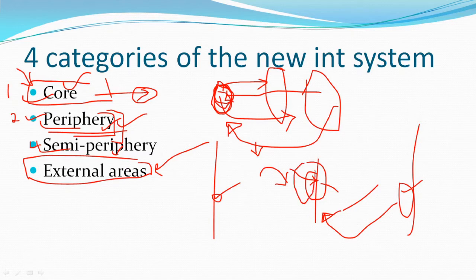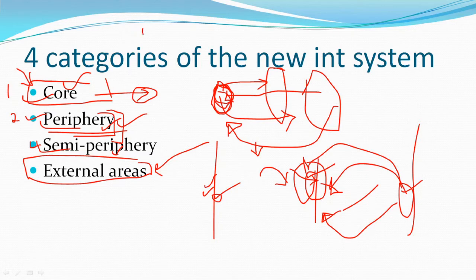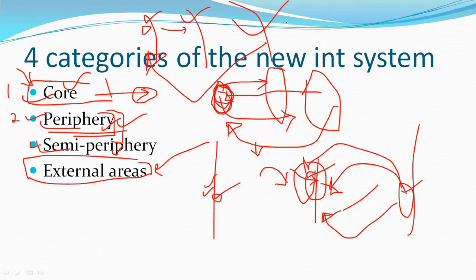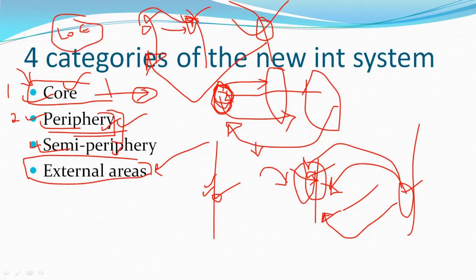The semi-peripheral countries also exploited the peripheral countries — everyone exploited the periphery, with the core doing it in a much more systematic manner. Again, using the Hunger Games example: the further you move from the core — the Capital, the center — the poorer you get, because all raw materials are exported cheaply from the poorest countries. That manufactured raw material is then sold back at higher prices to those same poorer countries.